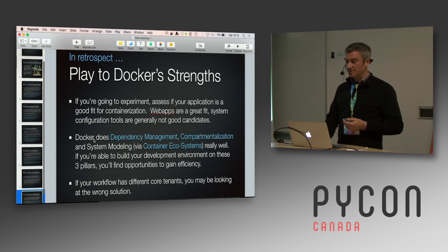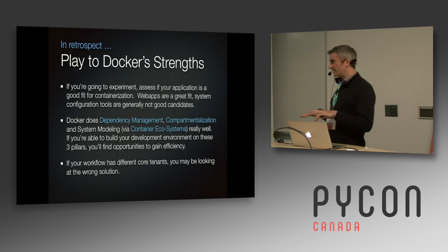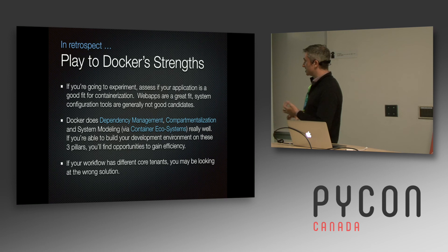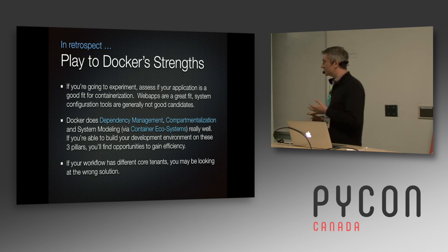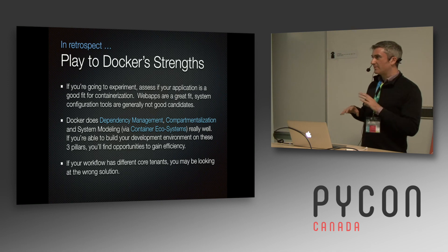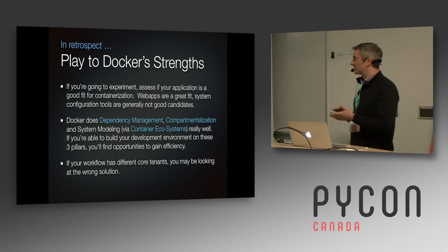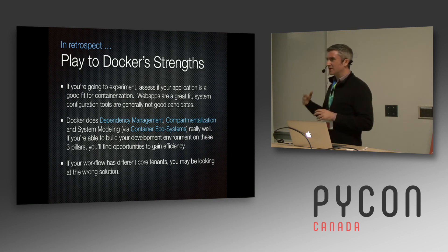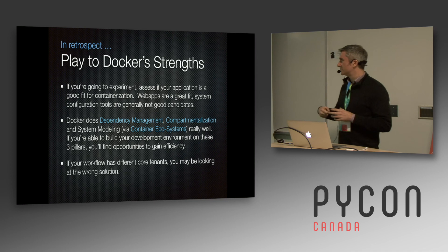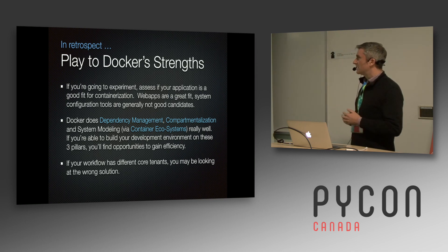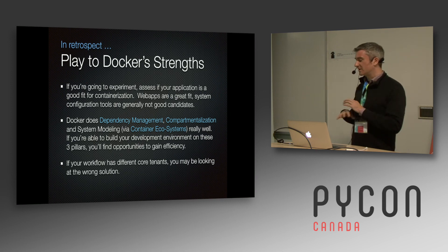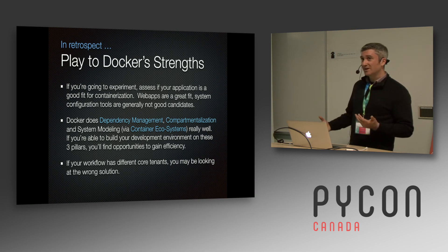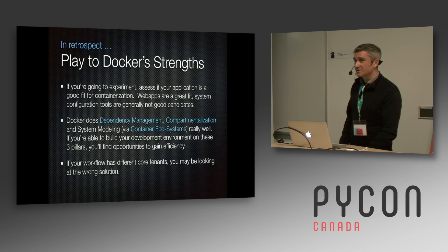To summarize: Docker does three things really well in a development context — dependency management, compartmentalization, and container ecosystem support. If your app is going to cloud, you might really want to think about this. If you're managing stuff that doesn't fit in a container, like kernel-level things or managing other parts of your machine from inside a container, that's an anti-pattern and it doesn't really work. That's pretty much all I have to say — thanks for listening and enjoy the rest of the conference.